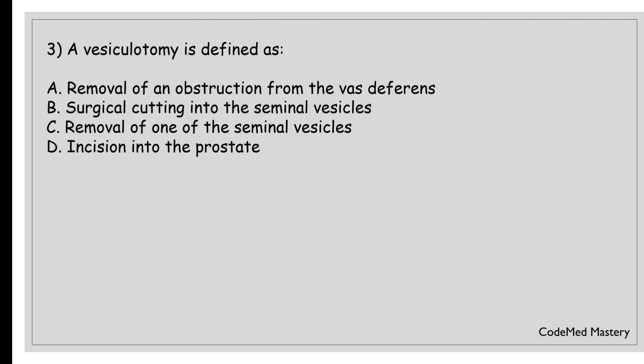Next question: a vesiculotomy is defined as: option A, removal of an obstruction from the vas deferens; option B, surgical cutting into seminal vesicles; option C, removal of one of the seminal vesicles; option D, incision into the prostate. The right answer is option B, surgical cutting into seminal vesicles. A vesiculotomy is a surgical procedure involving incision into the seminal vesicles, which are glands located near the prostate responsible for producing a significant portion of seminal fluid.